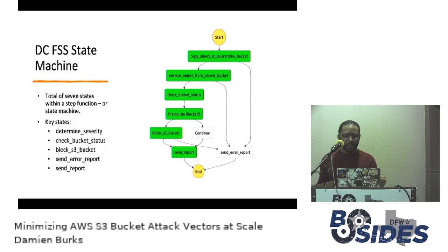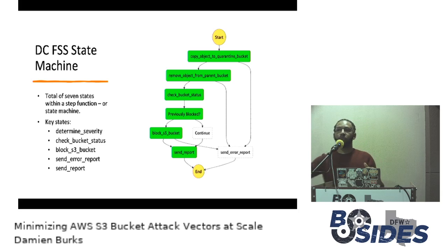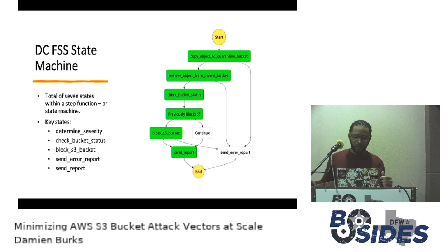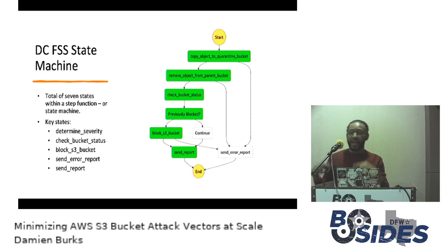The state machine for FSS has quite a few more than seven states, because we're not only blocking the S3 bucket but also copying the malicious object from that bucket into the quarantine S3 bucket and removing the bad file from the original bucket. So the steps are: first, copy the malicious object to the quarantine bucket; then remove that object from the parent bucket; check the parent bucket status to see if it's been blocked; and if not, block it and send a report. We're moving that information to a different bucket for analysis, then blocking the parent bucket.